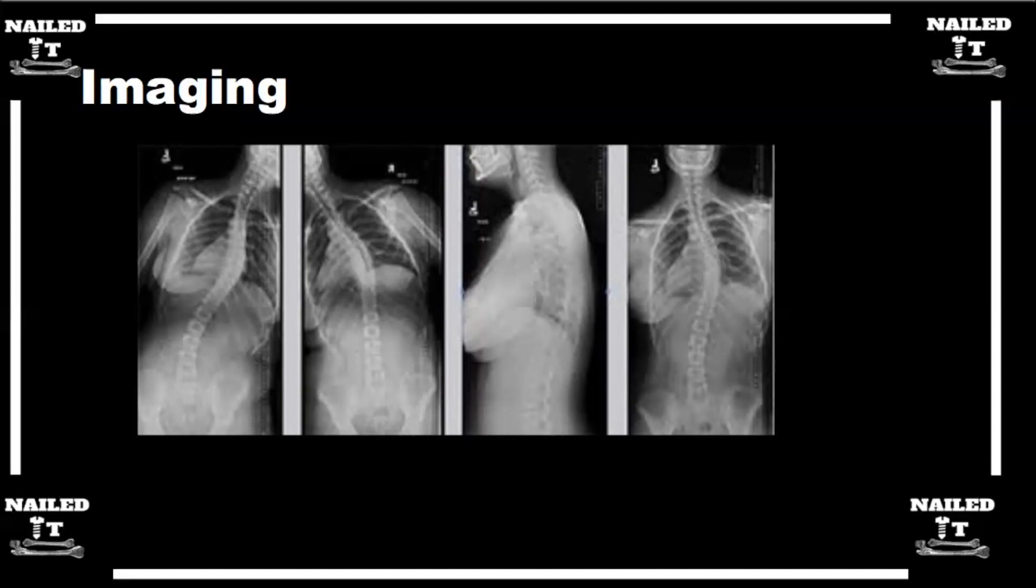But if you look at the lumbar spine here, although it's curved on that fourth picture, the PA X-ray, if you look at that second picture, that lumbar curve completely goes away on the bender. That tells me that is a non-structural curve. I do not need to fuse that, and that's going to be straight if I can make the thoracic curve straight.